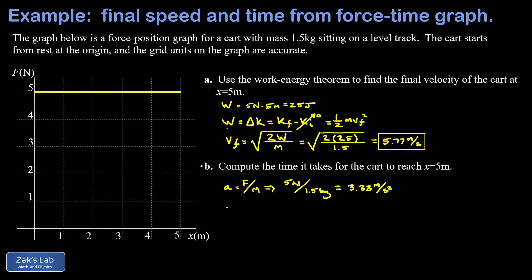Now because the acceleration is constant we're allowed to use the equations of constant acceleration kinematics. So we can write down the equation of motion for the cart: x equals x naught plus v naught t plus one half a t squared. We'll call the initial position zero, that means the final position is 5 meters. The initial velocity is also zero because the cart started from rest.